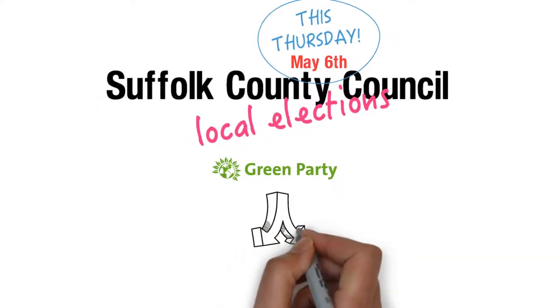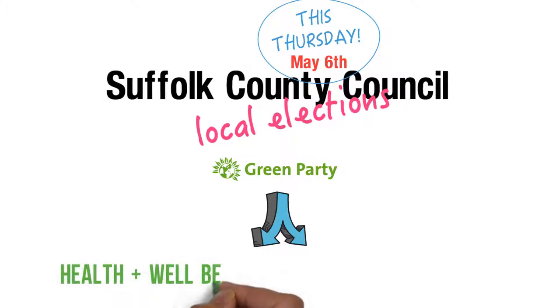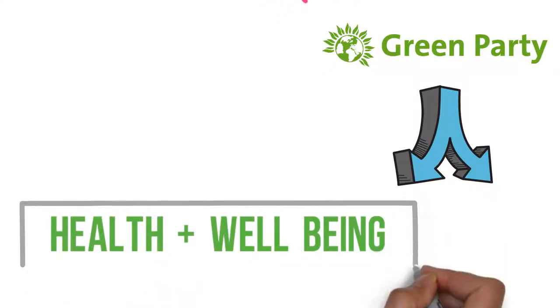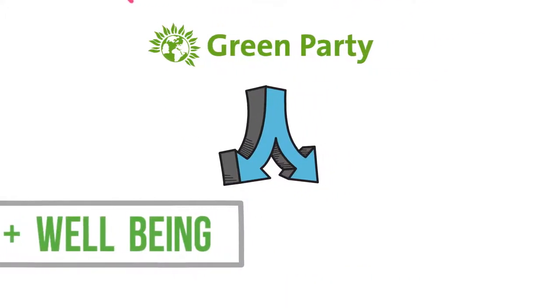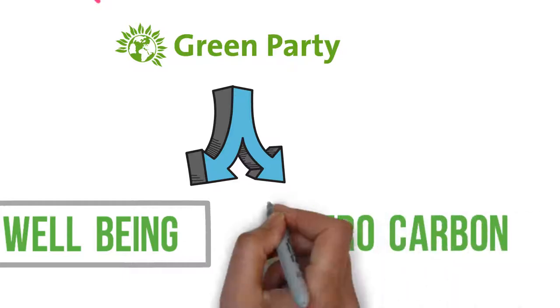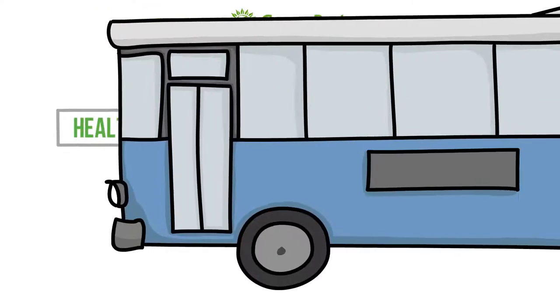A Green Administration would set two overarching priorities: improving the health and well-being of Suffolk citizens and meeting the zero carbon by 2030 target. The two will complement and reinforce each other.